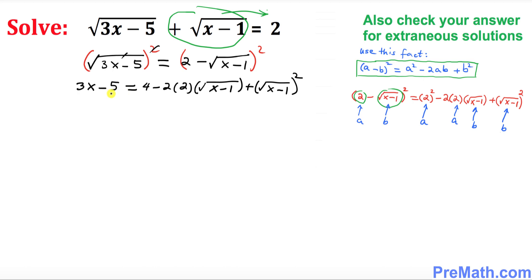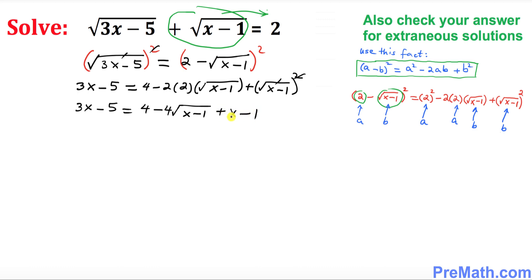Let's simplify: 3x minus 5 equals 4 minus 4 times square root of x minus 1. Here the square and square root undo each other, giving us x minus 1.